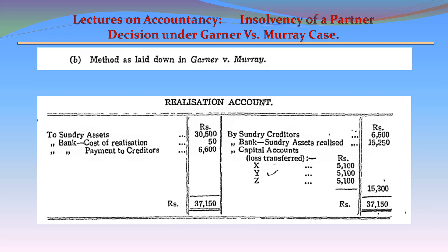Now coming to Part B: Method as laid down in Garner vs. Murray. Realization account — debit side: to sundry assets 30,500; to bank (cost of realization) 50; to payments to creditors 6,600. Credit side: by sundry creditors 6,600; by sundry assets realized 15,250; by capital accounts — losses transferred equally — X: 5,100; Y: 5,100; Z: 5,100.